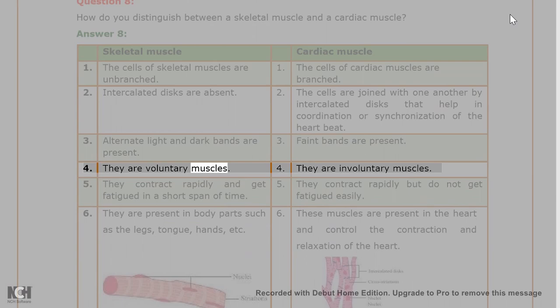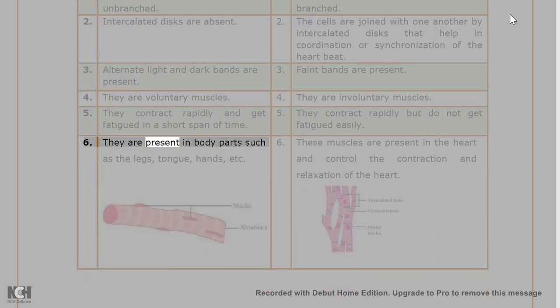4. They are voluntary muscles. 5. They contract rapidly and get fatigued in a short span of time. 6. They are present in body parts such as the legs, tongue, hands, etc. Cardiac muscle: 4. They are involuntary muscles. 5. They contract rapidly but do not get fatigued easily. 6. These muscles are present in the heart and control the contraction and relaxation of the heart.